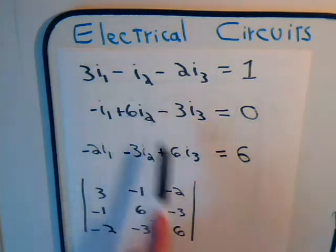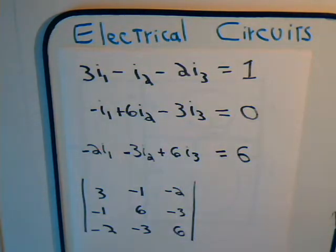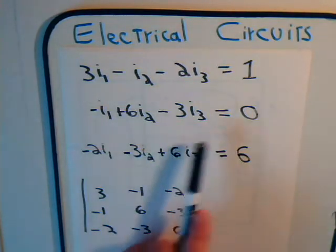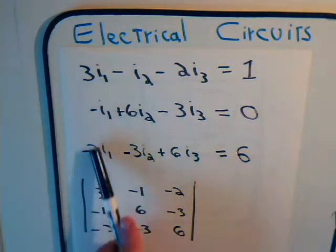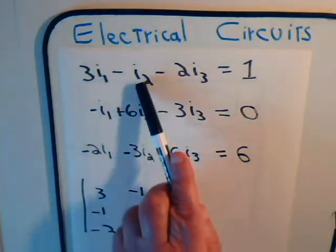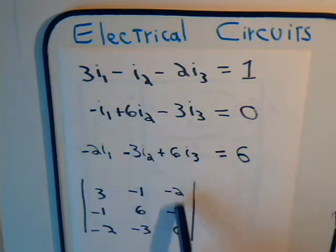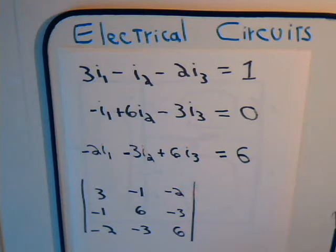Current one, current two, and current three. We have three equations to use to solve for these three currents. Our next step was this matrix. We used these column numbers to form this determinant, and we determined that this had a numerical value of 39.